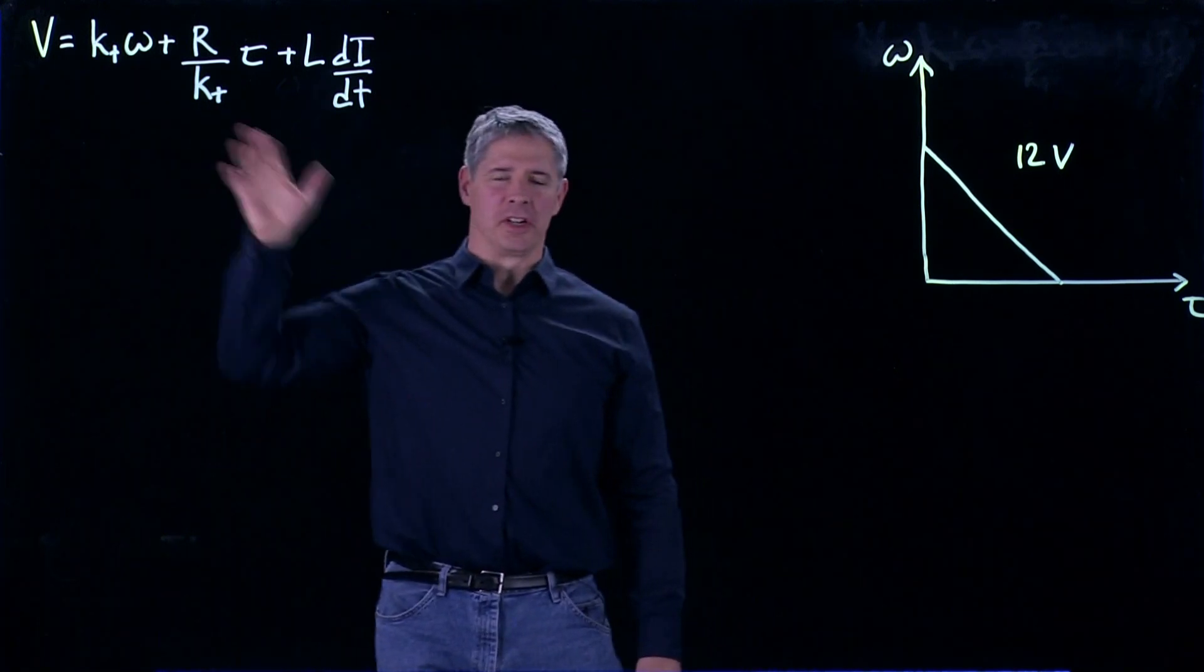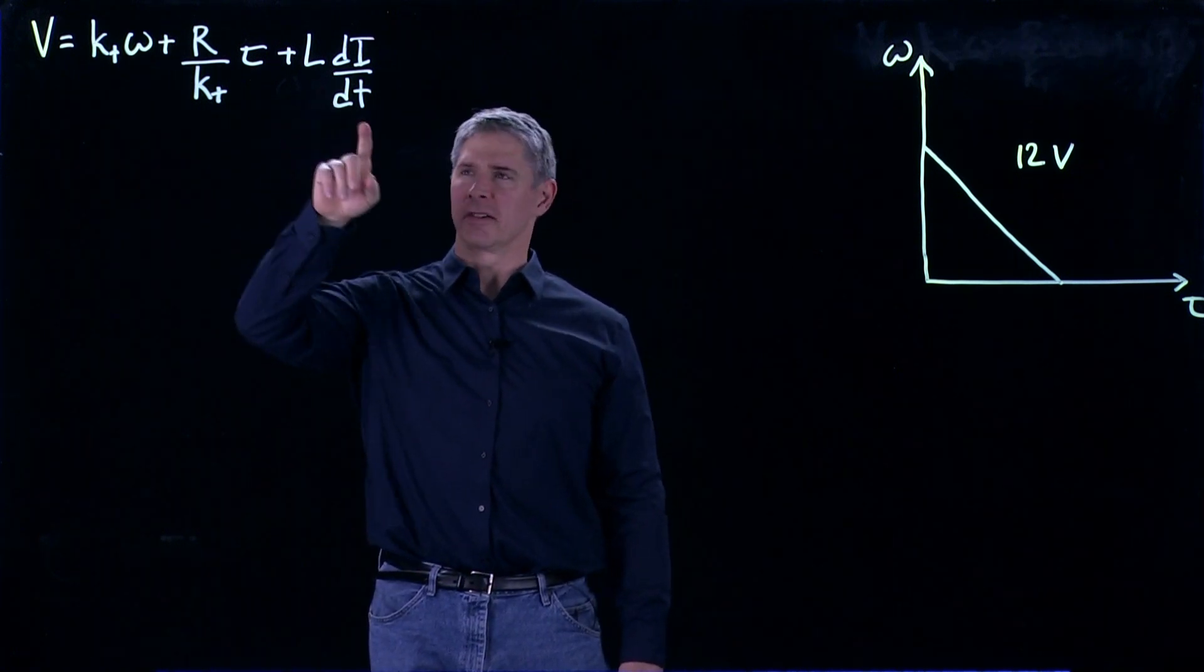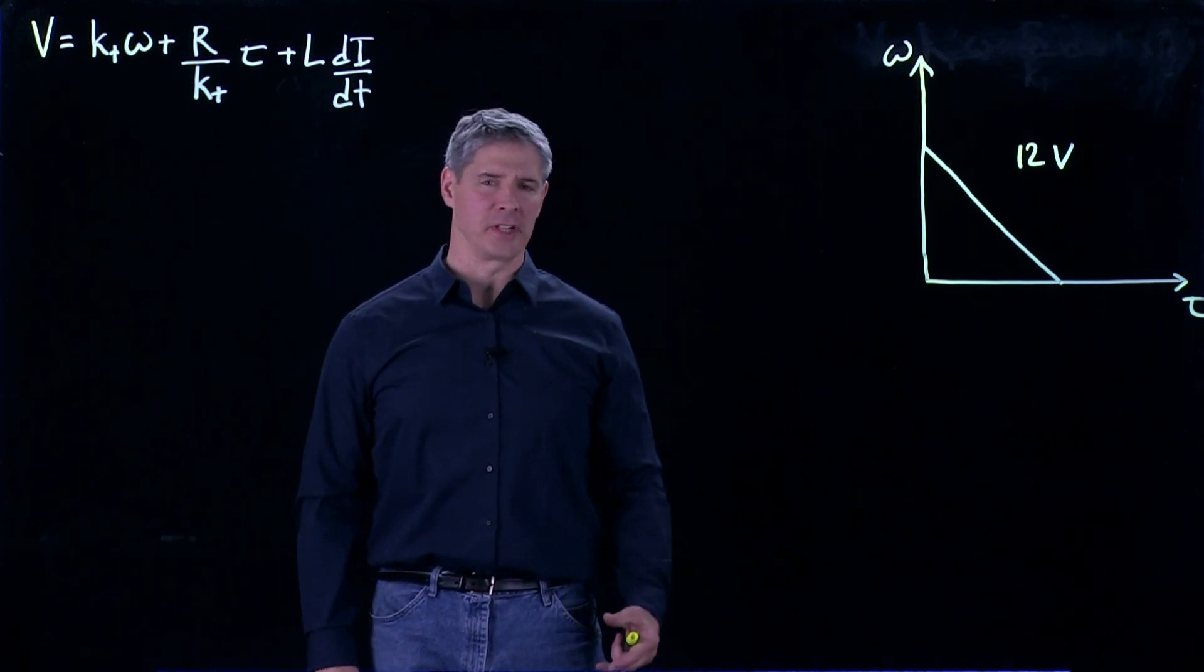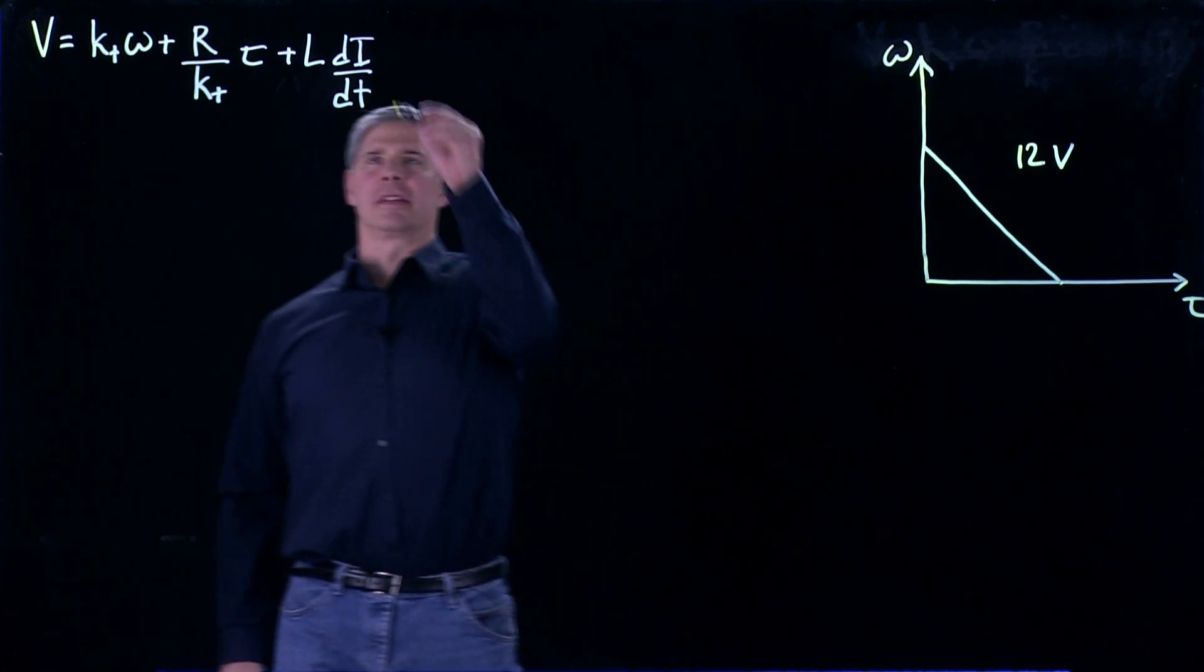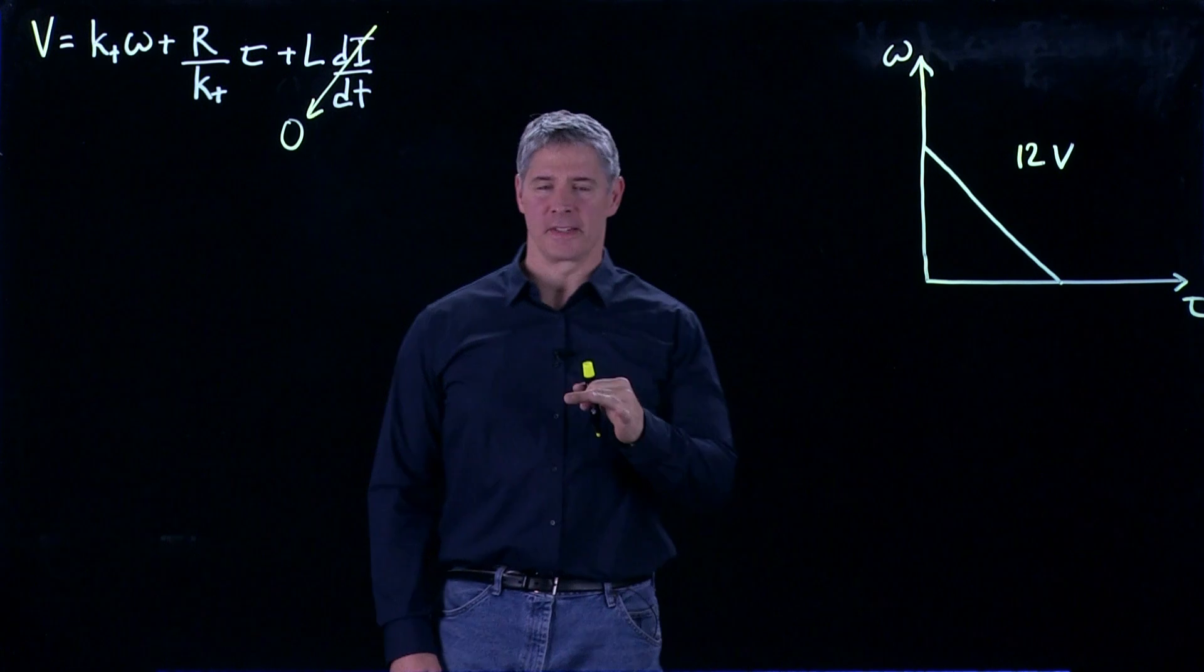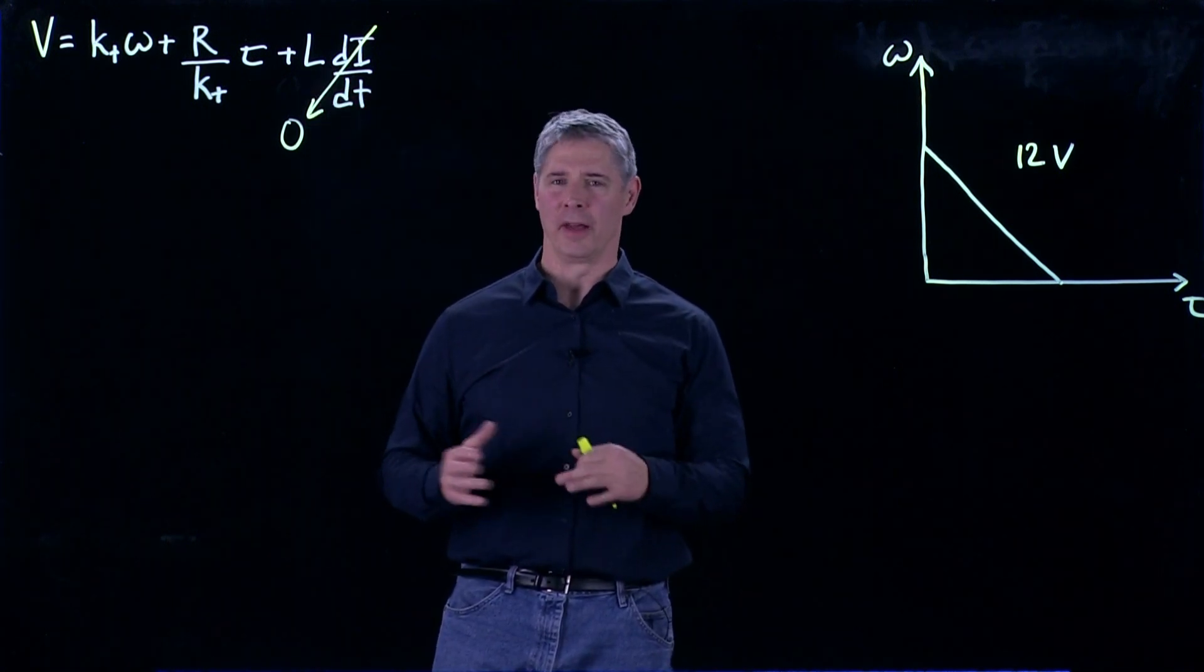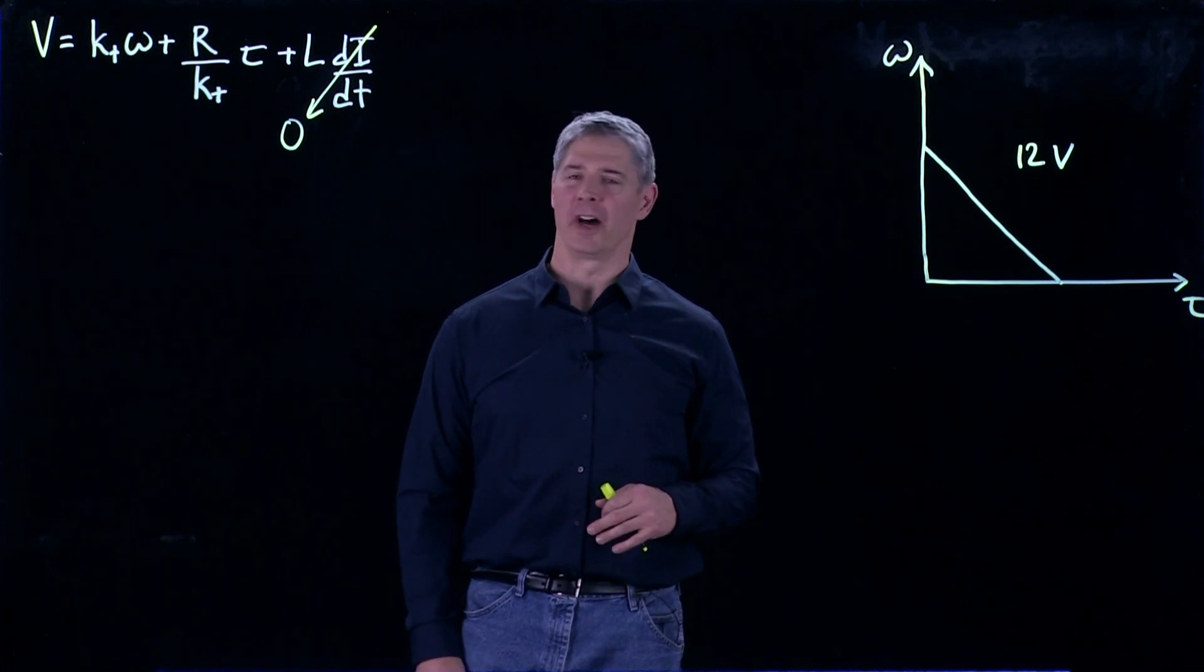This is the governing equation of a DC motor, and if we assume that either the inductance is zero or that the time rate of change of current is zero, this last term goes away. And for the purposes of this video, we'll assume that the inductance is zero, so we don't have to worry about whether the current is changing or not.